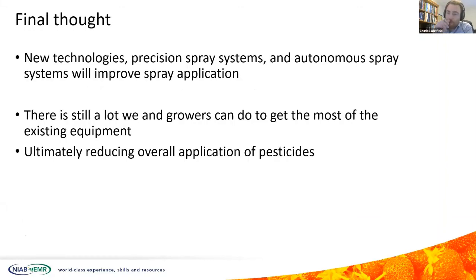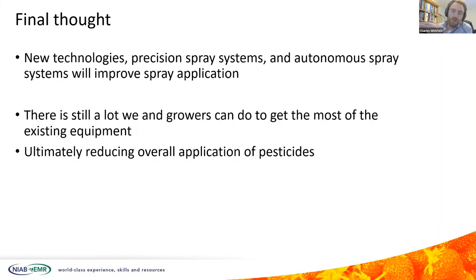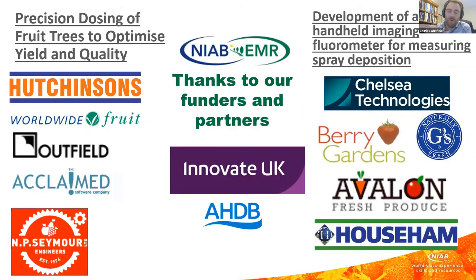Final thought: new technologies and precision spray systems are becoming more available and will be more widely adopted by growers. However, in the meantime there is still a lot we and growers can do to get the most out of existing equipment and ultimately reduce the amount of pesticide applications. Thank you very much for listening — I hope there's been some useful information in there — and thanks to all the partners and funders we've worked with over the years, particularly for the two projects discussed in today's presentation.